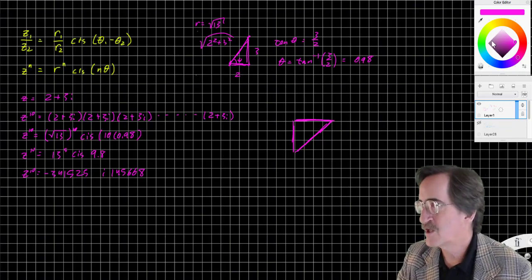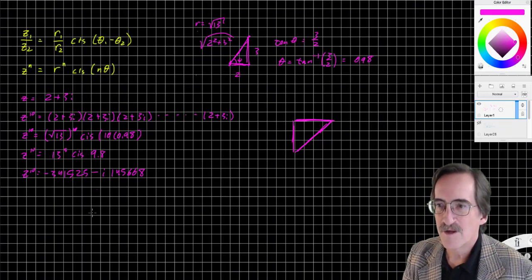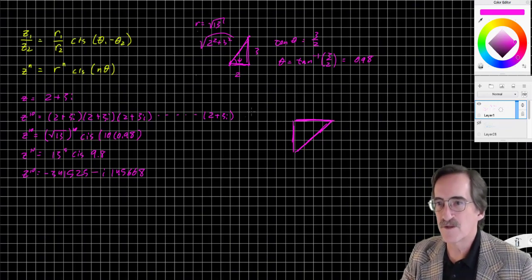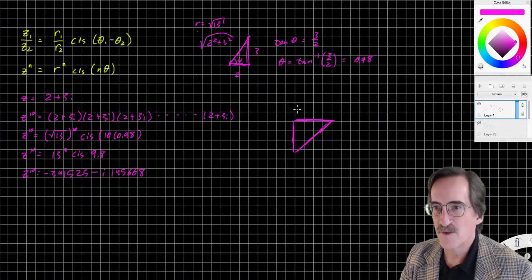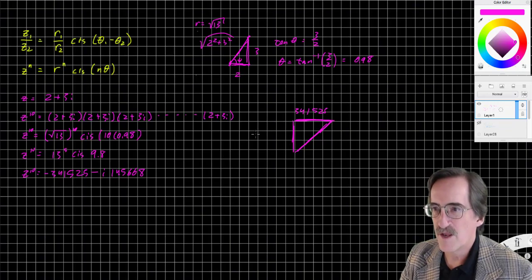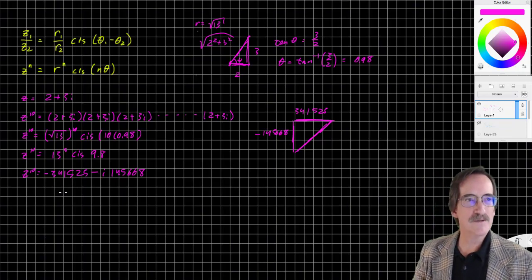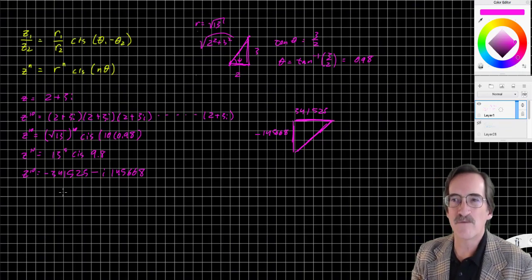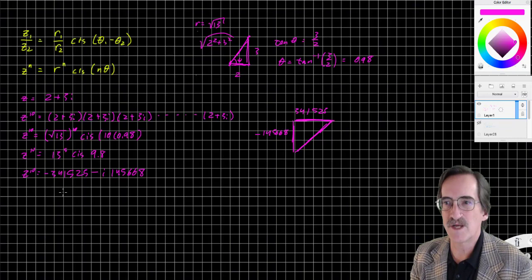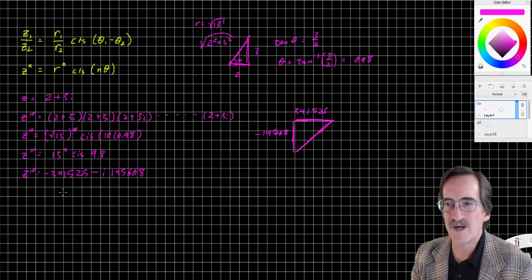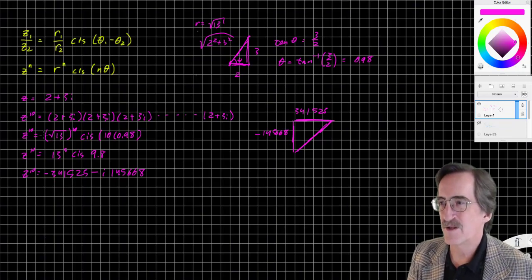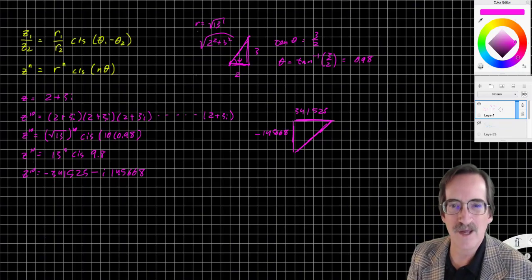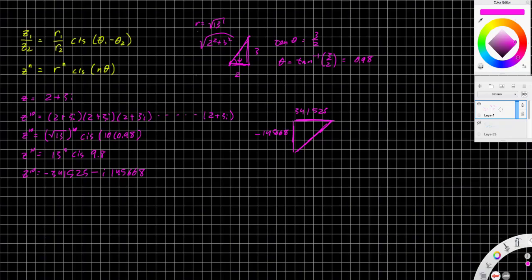Boom shakalaka. All right. So that's definitely in the third quadrant. Negative 341,525 and negative 145,668. And that would have taken absolutely forever to do by hand by any other method. But converting to polar form, raising the R to the power of 10, multiplying the angle theta by 10, gives me the answer in relatively easy form.